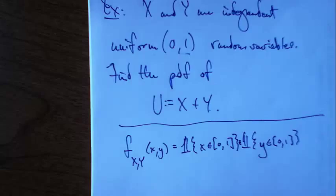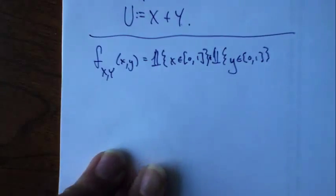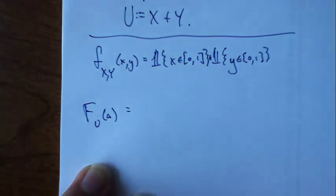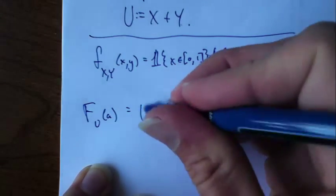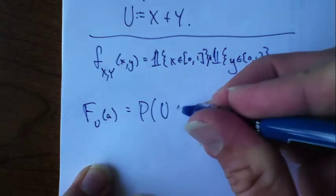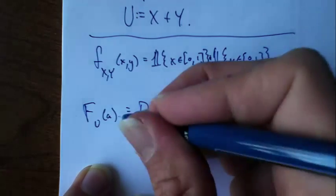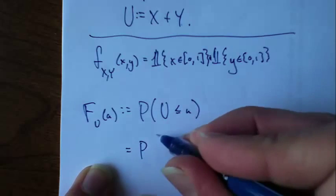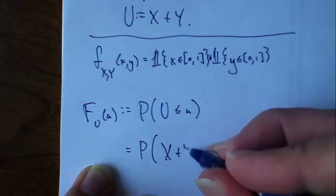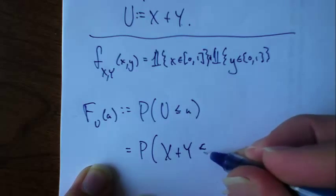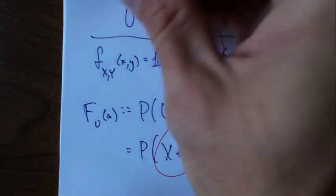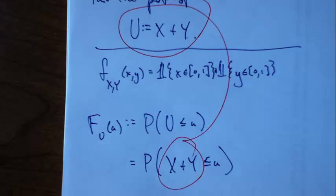Now I want to write down some kind of expression for the CDF of u. I can write this - I know what that means. That means it's the probability that u is less or equal to u, by definition. Like I did last time, at this point I'm going to substitute in my expression for u. Stick that in there.